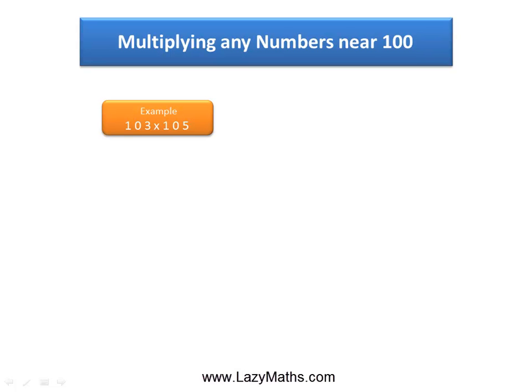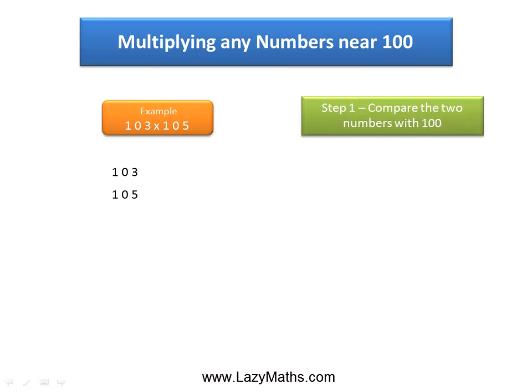Here's an example of multiplying any numbers near 100: 103 times 105. As you can see, both these numbers are close to 100, so our first step is to compare them to 100.